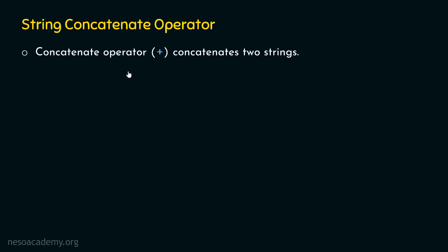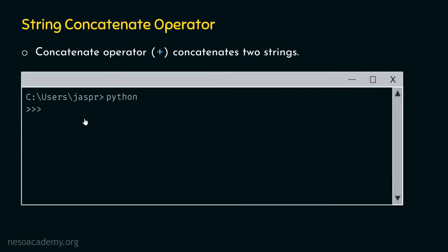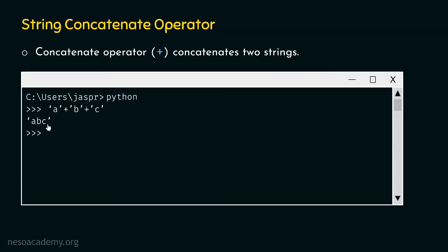Let's consider one example to understand how we can concatenate two or more strings in Python. I am in my command prompt and I have activated the interactive shell. We type python and hit enter to activate the interactive shell. Now let's type this command: 'A' plus 'B' plus 'C'. Here I have used two concatenate operators to combine these three strings.